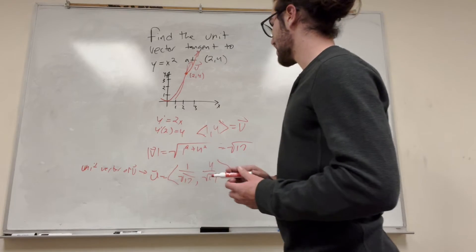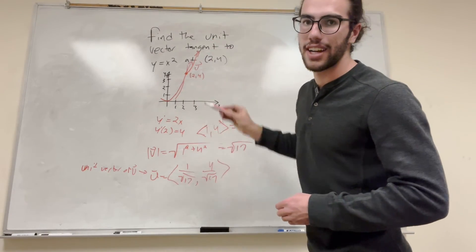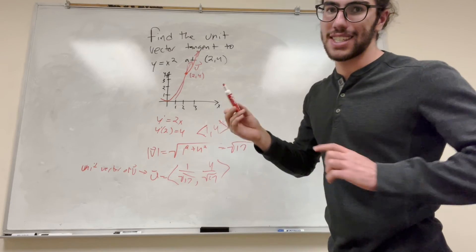And basically what this is, is this is a vector that points in the same direction as the tangent line, but its magnitude is only 1. That means its distance is only 1.